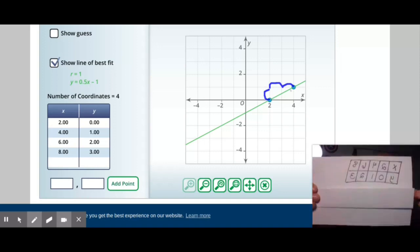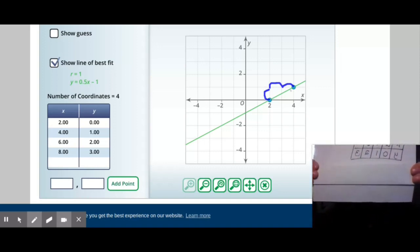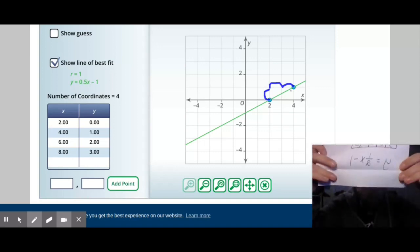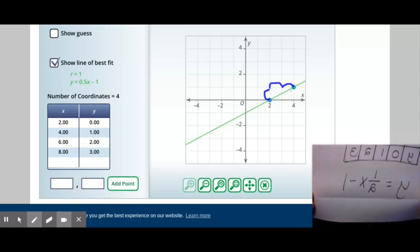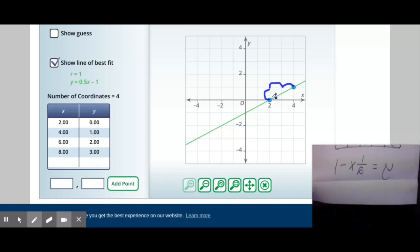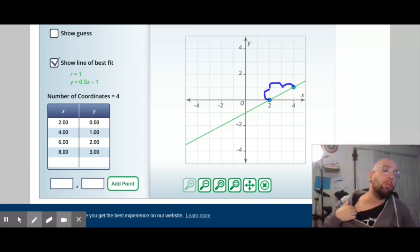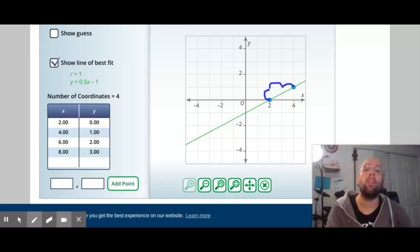So instead of saying y equals point five x minus one I should be saying y equals one half x minus one because my slope is up one over two. Okay so that's what you do if you're given a decimal for a slope: you zoom in and you find the rise over run that way and convert your decimal into a slope.